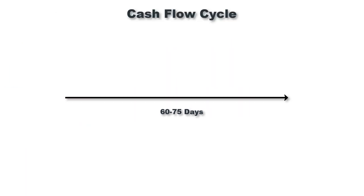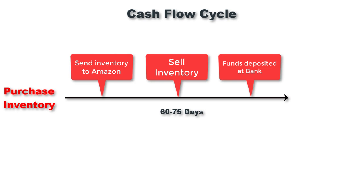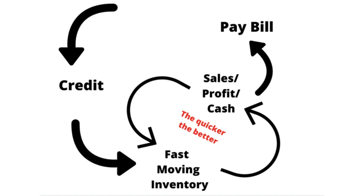Our goal is to get account terms with our distributors — essentially a 30-day credit period to pay off an account. Ideally they'll allow you to pay off that account with a credit card, which gives you 30 to 45 more days before cash leaves your account. This gives you around 60 to 75 days to purchase inventory, send it to Amazon, sell through it, and have the funds deposited from Amazon into your bank account — hopefully before your bills are due. If you can do this successfully, then by definition you can grow without limit. This is what I mean by successfully managing cash flow.